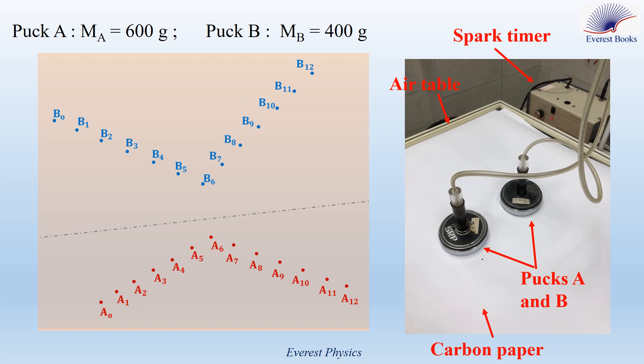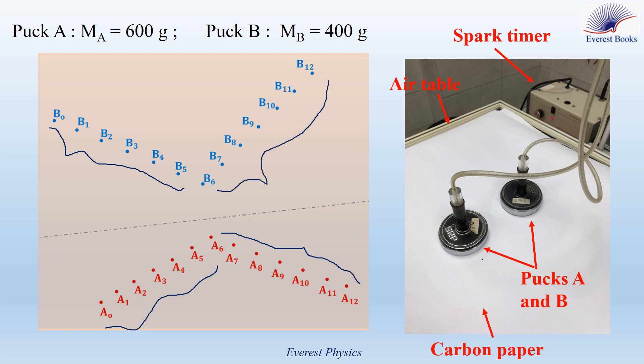Now, A0, A1, A2, A6 and B0, B1, B2, B6 are the successive positions of the centers of mass of the pucks A and B before the collision. Whereas A6, A7, A12 and B6, B7, B12 are the successive positions of the two pucks after the collision. Now Rabia and the students will show you the performed experiments.